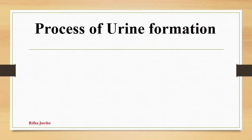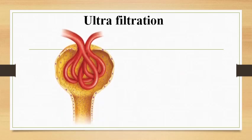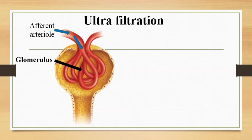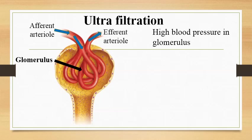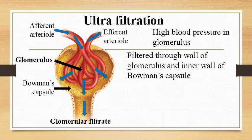Urine formation takes place by mainly three processes: ultrafiltration, selective absorption and secretion. The renal artery entering into the nephron is called the afferent arteriole. The afferent arteriole divides to form the glomerulus, which is a network of blood capillaries. Inside the glomerulus there is high blood pressure because the blood capillary exiting, called the efferent arteriole, has a smaller diameter compared to the afferent arteriole. Due to this high blood pressure, blood is filtered through the wall of the glomerulus and the inner wall of Bowman's capsule. This process is called ultrafiltration, and the filtrate is collected at the cavity of Bowman's capsule.